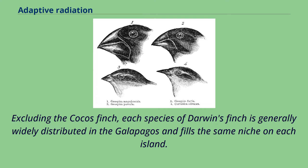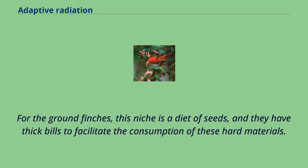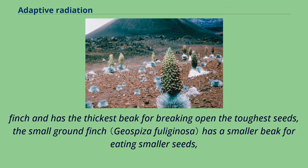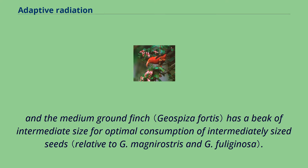Excluding the Cocos finch, each species of Darwin's finch is generally widely distributed in the Galapagos and fills the same niche on each island. For the ground finches, this niche is a diet of seeds, and they have thick bills to facilitate the consumption of these hard materials. The ground finches are further specialized to eat seeds of a particular size. The large ground finch is the largest species of Darwin's finch and has the thickest beak for breaking open the toughest seeds. The small ground finch has a smaller beak for eating smaller seeds, and the medium ground finch has a beak of intermediate size for optimal consumption of intermediately sized seeds.